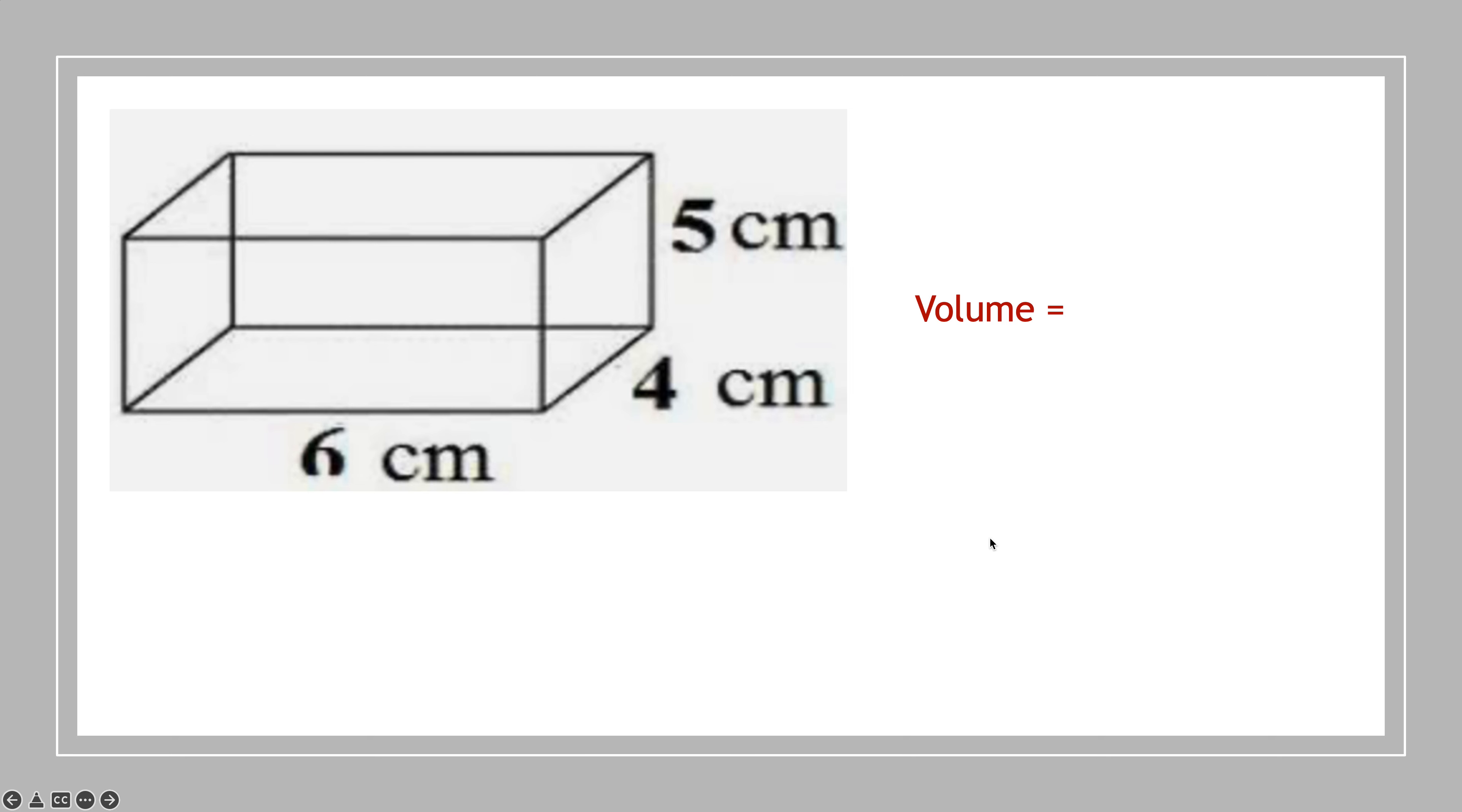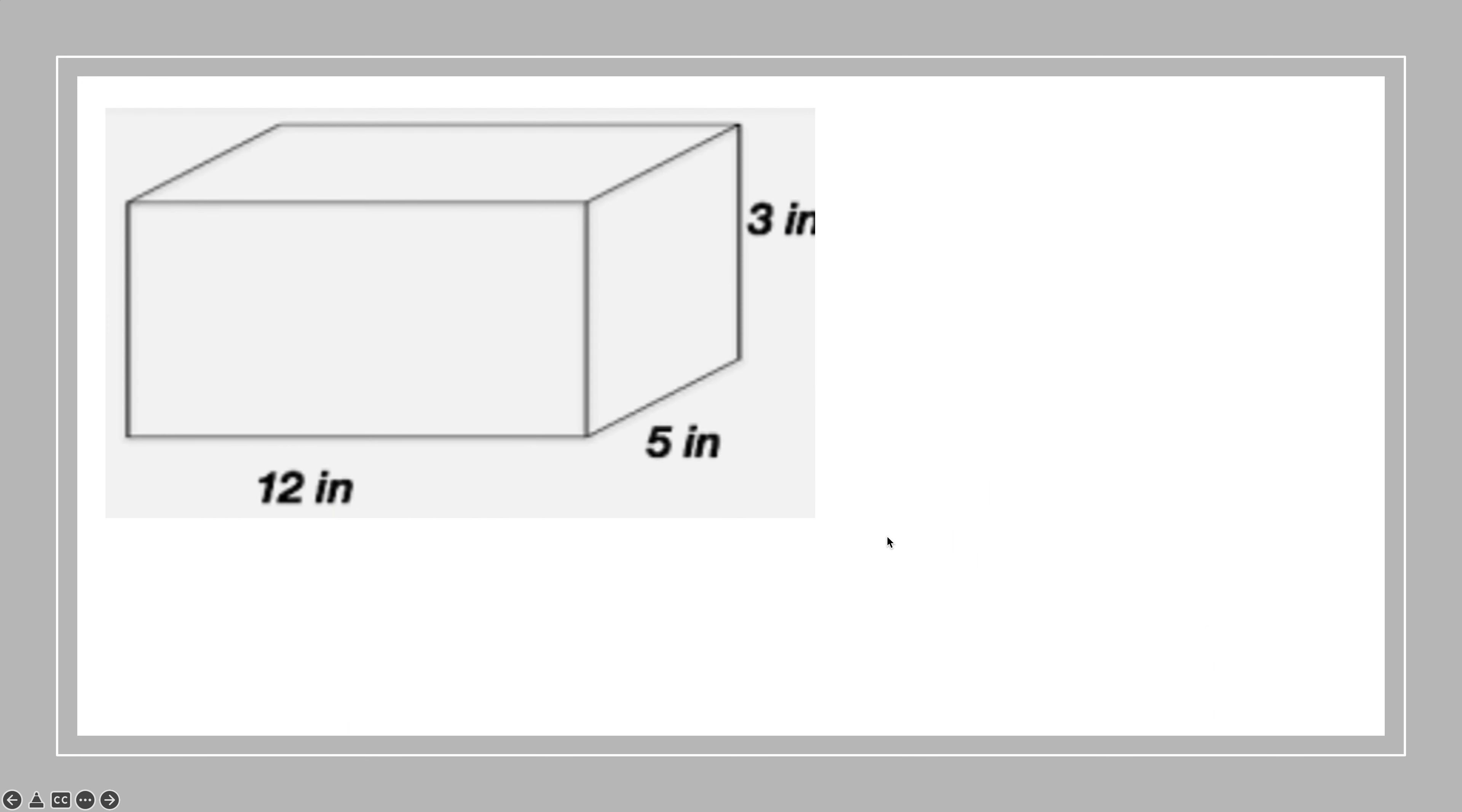I like my area of the base times the height. So the area of the base is 24, because it's 6 times 4. Multiply that by the height, which is 5, and I get 120. But what if you're one of these formula lovers? You could just do length times width times height, which is 6 times 4 times 5, which is also 120. Whatever floats your boat.